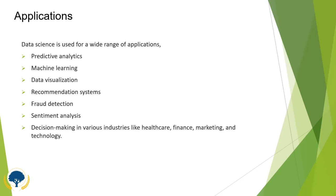The next application is recommendation systems. If you are searching for a Tamil song on YouTube and playing it, you can see recommended videos or songs below that video of the same category — that is a recommendation system. Similarly, if you are purchasing a product from Amazon or Flipkart, you can see product recommendations. This kind of recommendation system comes out of data science.